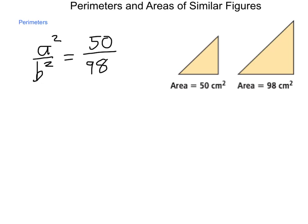If I were to solve this, I'd take the square root of both sides. Square root of 50 is 5 square root of 2. And square root of 98, well 98 is 49 times 2, so it is 7 square root of 2.